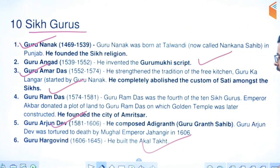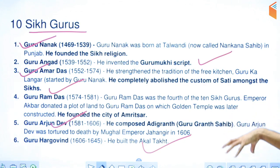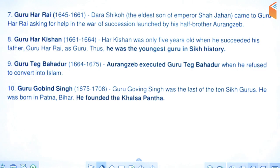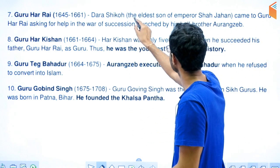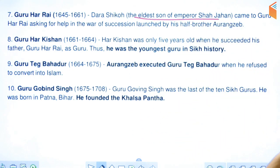Guru Hargobin ji built the Akal Takht, which you can see today in the center of the Golden Temple complex — it was built by Hargobin ji. Guru Har Rai ji helped Dara Shikoh, who came to him for assistance against Aurangzeb.